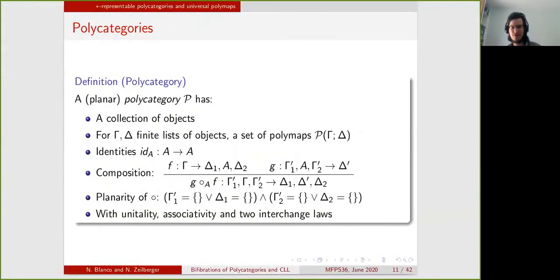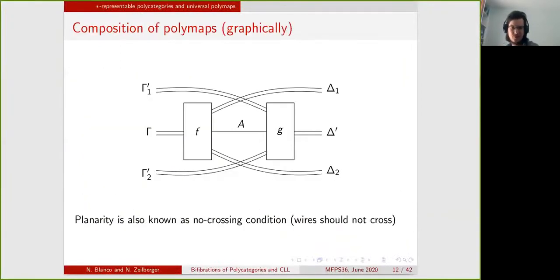The fact that our polycategories are planar and not necessarily symmetric puts some restriction on the composition, which I will explain by looking at how to represent polymaps graphically.